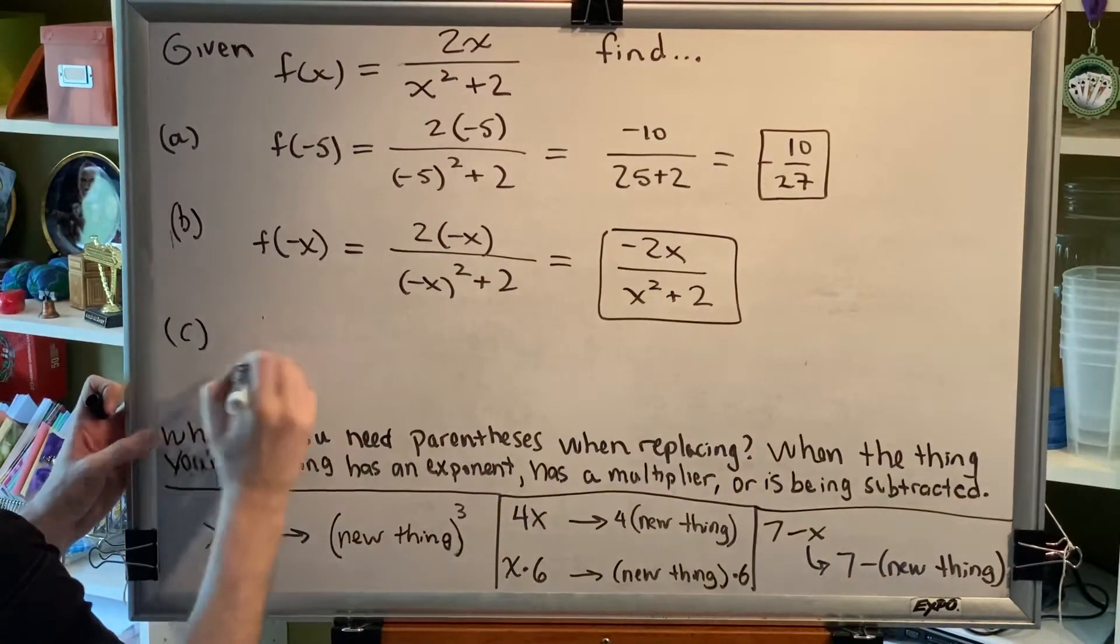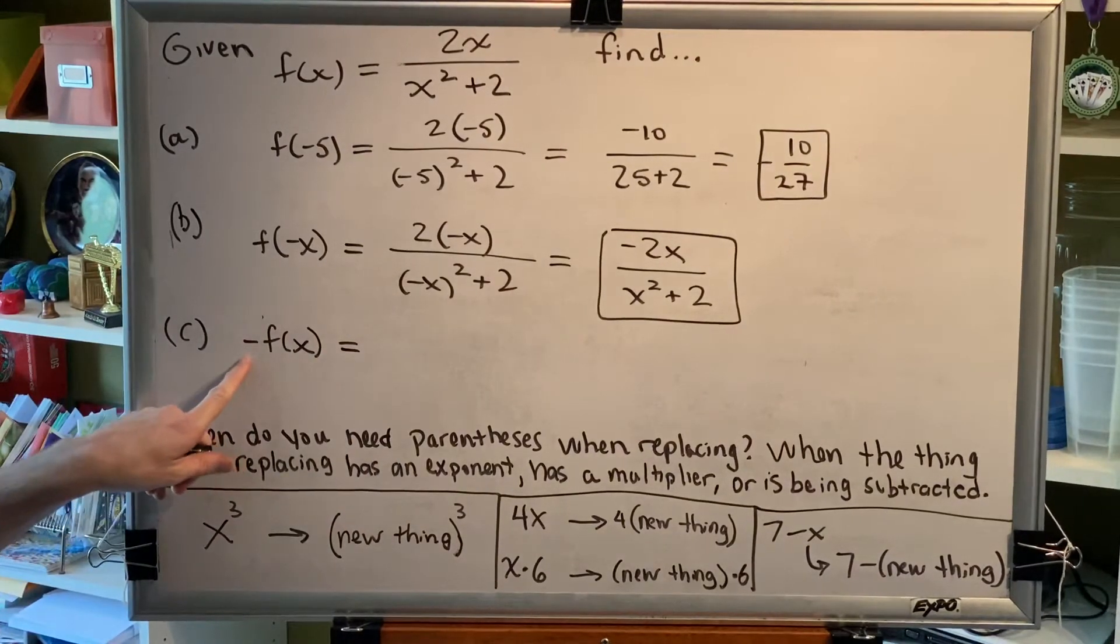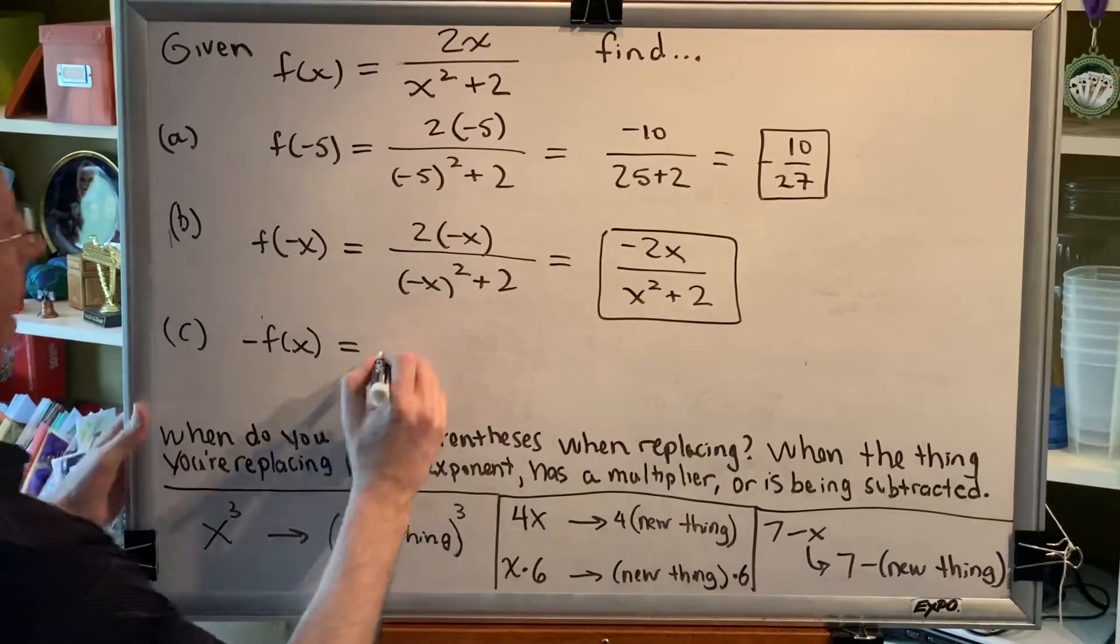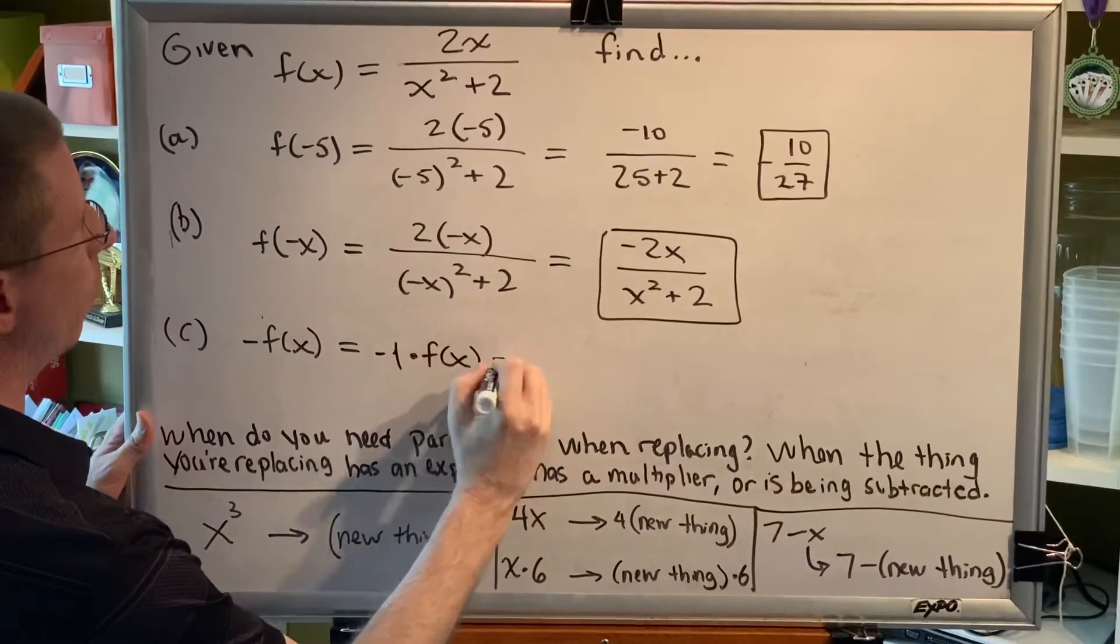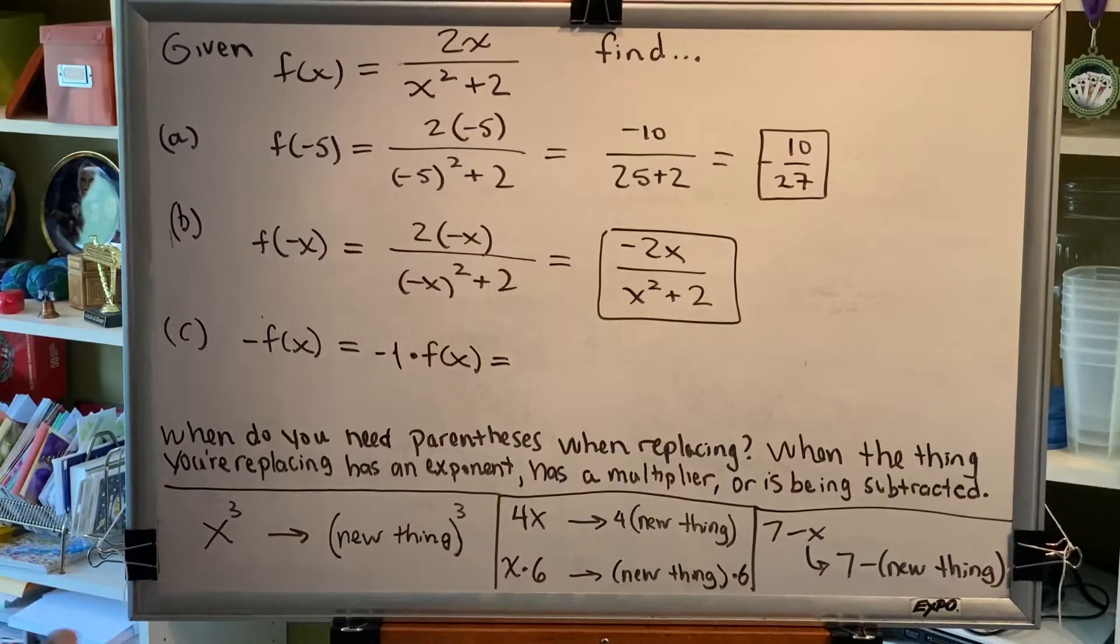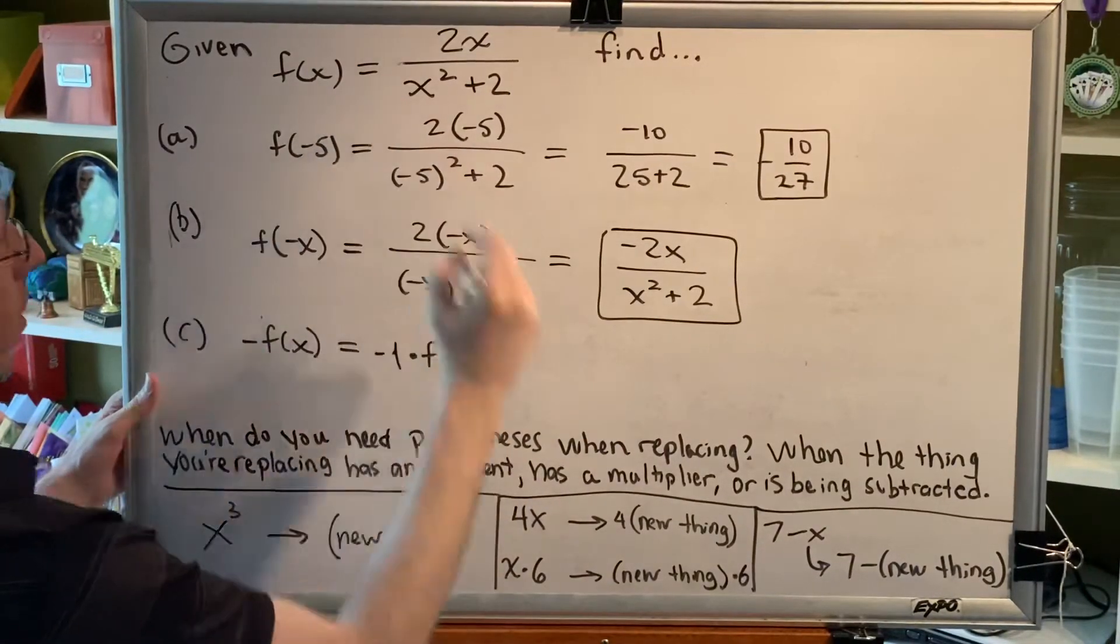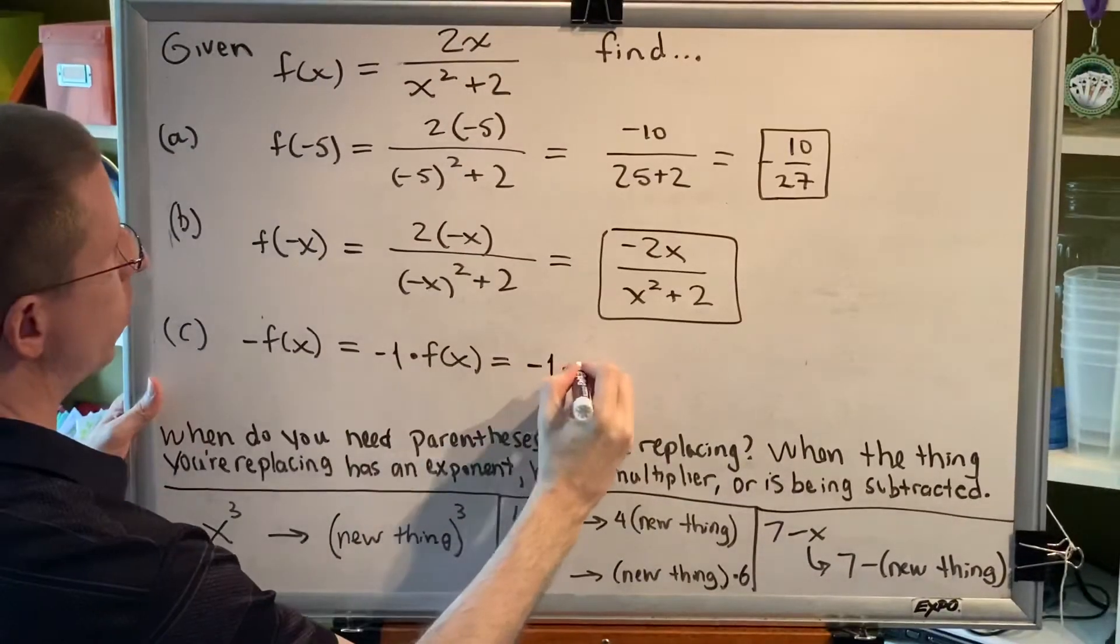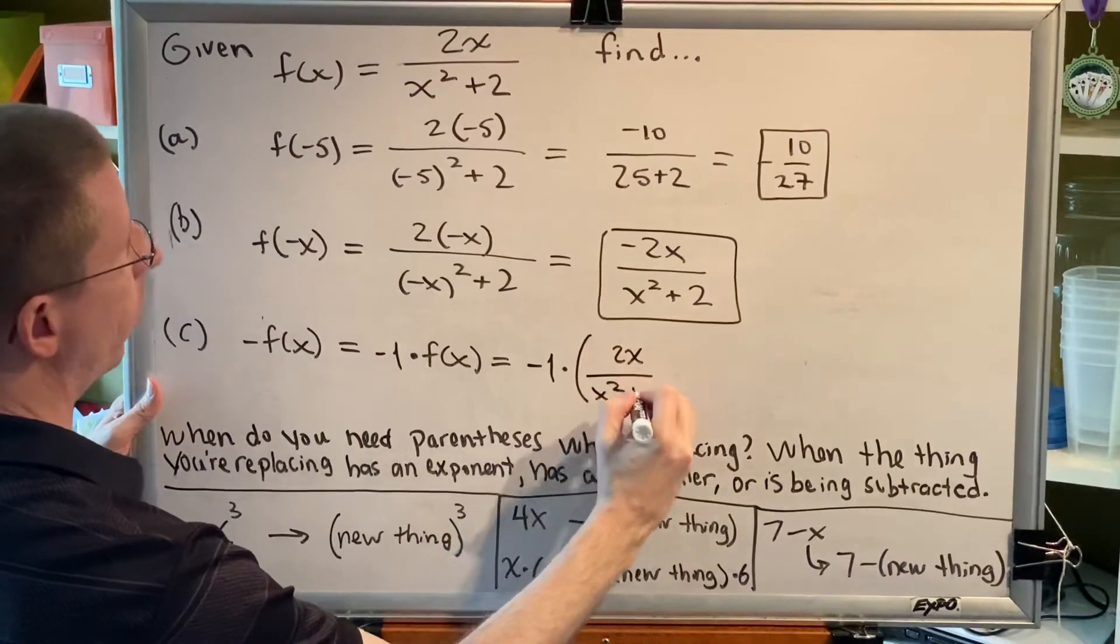Part c says to find negative f of x. Well, remember, negative in math is shorthand for negative 1 times. So this is the same thing as negative 1 times f of x. We're going to replace f of x, the whole thing, with what it equals, and because it has a multiplier, we'll use parentheses. So we have 2x over x squared plus 2.